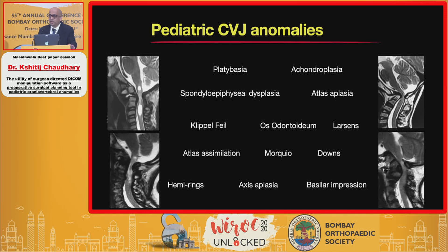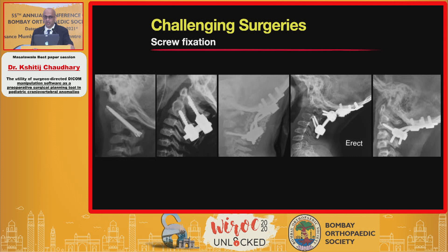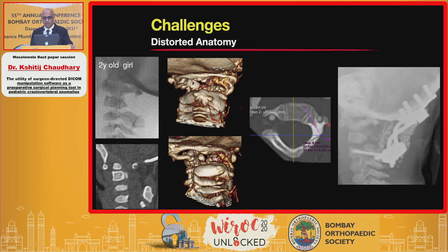The problem of CVJ anomalies in children is the sheer breadth of pathology that can lead to problems in this region. Surgeries, especially screw fixation in this patient population, can be challenging. One challenge faced by the surgeon is the distorted anatomy, like this two-year-old girl with aplasia of the C2 neural arch.